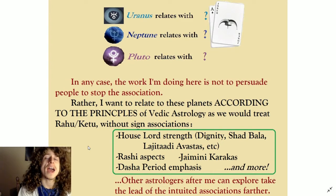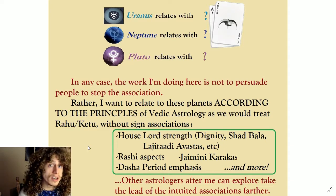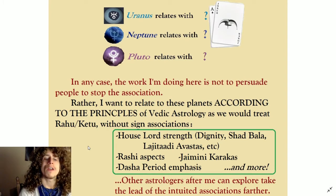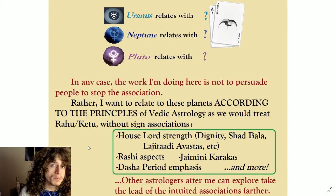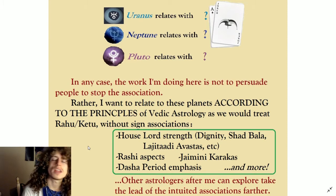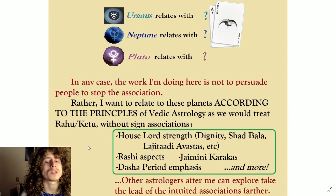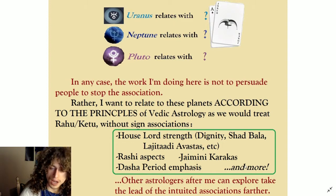The strength of Saturn is going to define the strength of Neptune — the strength of my capacity to deal with the lessons of Neptune. That's by Saturn's dignity in the house that it's in, its Shadbala, its strength. Lajjitaadi Avasthas — which is like the planet being affected by other planets, by its friends and its enemies — is a Vedic concept. Even the concept of planets having friends and enemies is something specific to Vedic astrology. We're also going to talk about Rasi aspects, Jaimini Karakas, and the Dasha period emphasis.